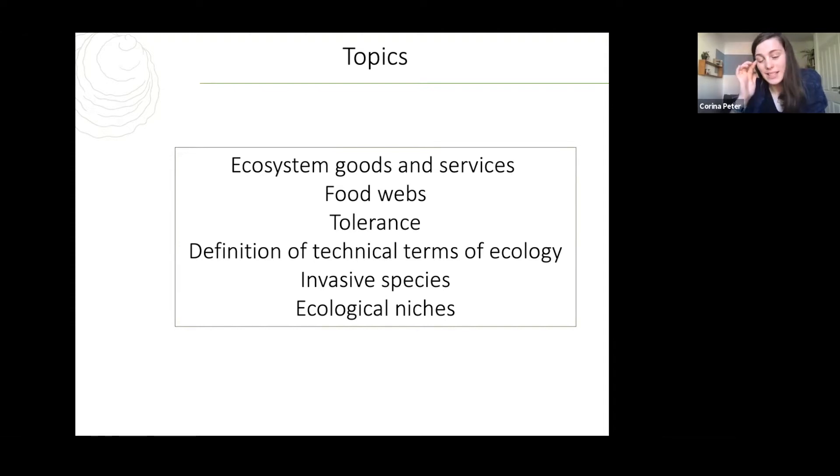Of course the definition of the technical terms of ecology, but also invasive species. In Germany in the Wadden Sea we have the Pacific oyster a lot. So whenever you go somewhere, especially to schools or to also when you talk to tourists there, and you say oyster, so the first word would be Pacific oyster or invasive. That's a big thing also in the media, so we kind of use this to get their attention and to show the differences between the two species and also to explain, for example, ecological niches.